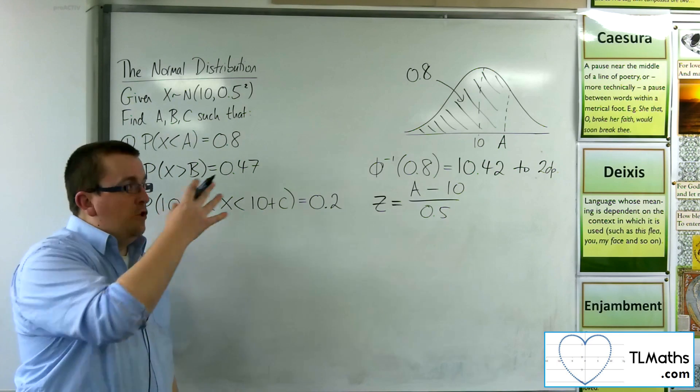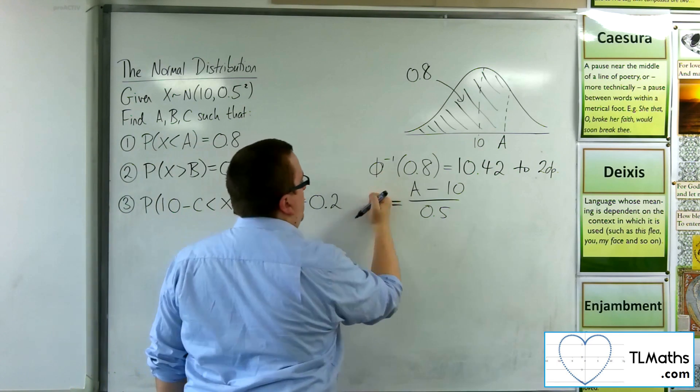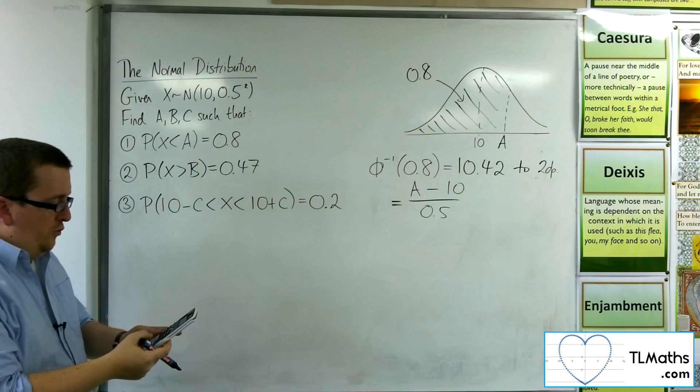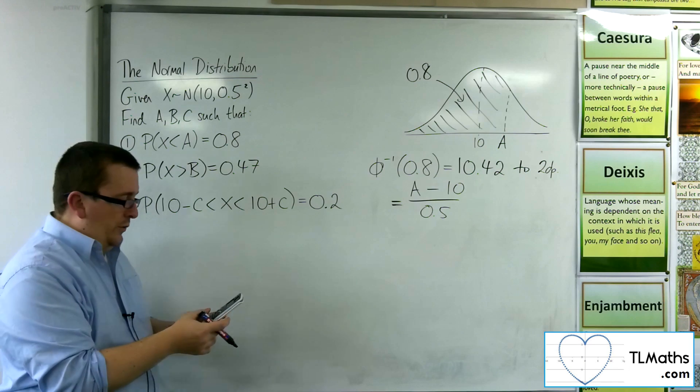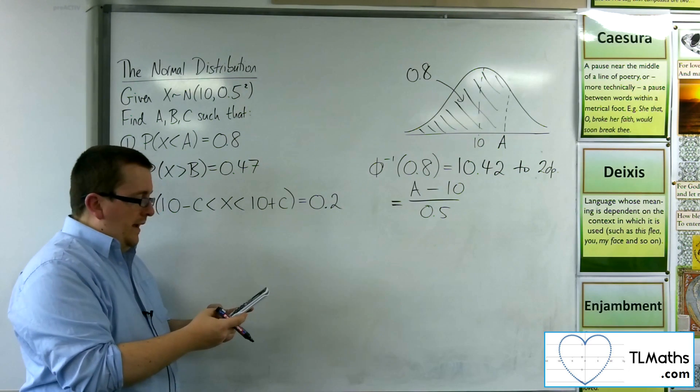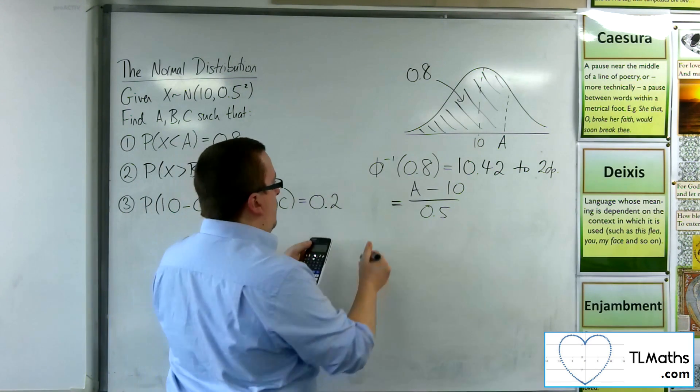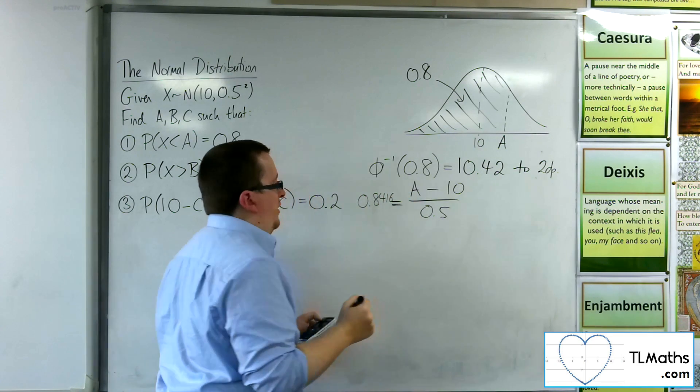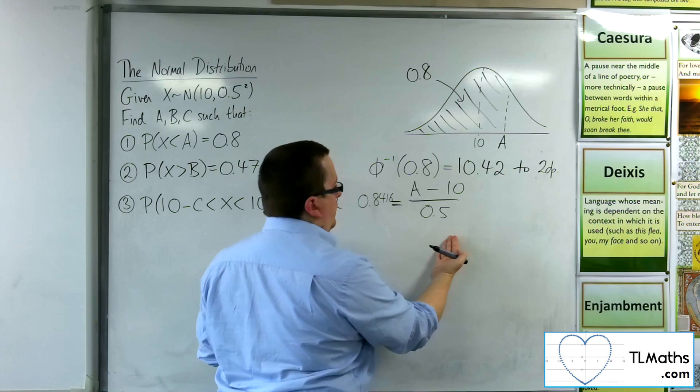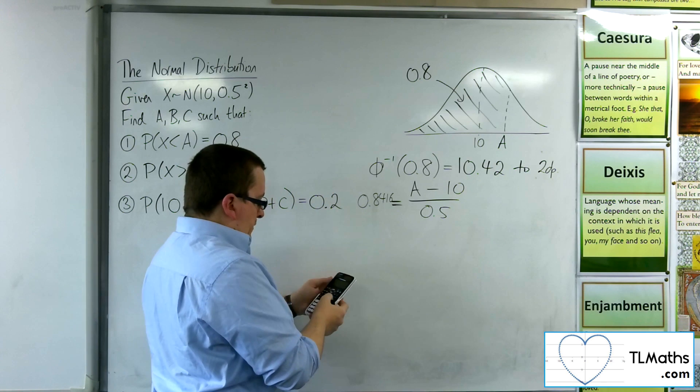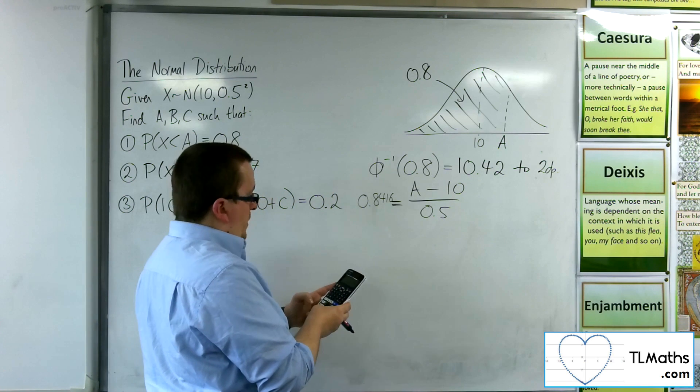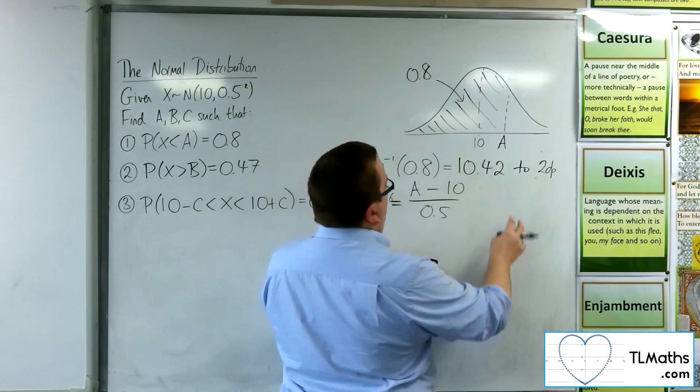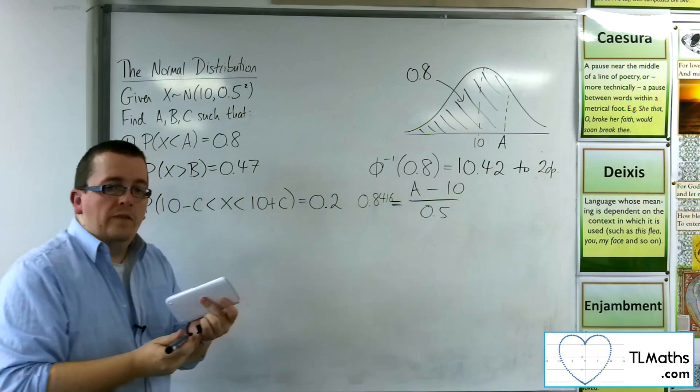The inverse norm that we need is the z value. And so it's not that 10.42. It is the standard normal. So when you go into inverse norm, your area is still 0.8. But your sigma is 1 and your mean is 0. And that gives you 0.8416 to four decimal places. So this gives you an equation to solve to find a. So if we do 0.8416 times by 0.5, then add the 10, we get to the 10.42 that we've got there.